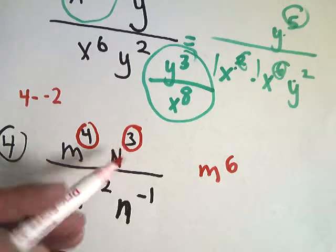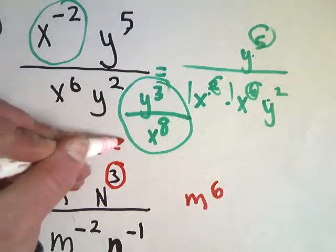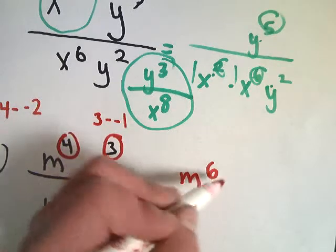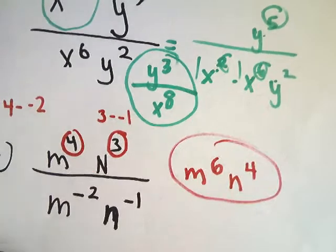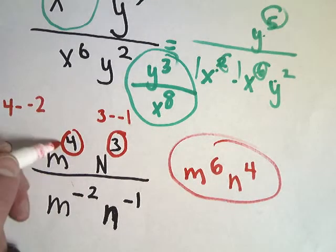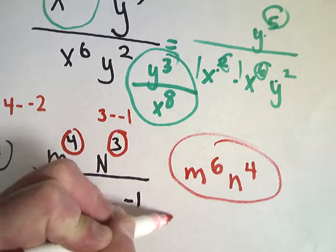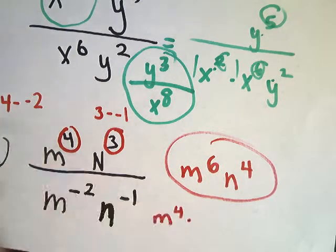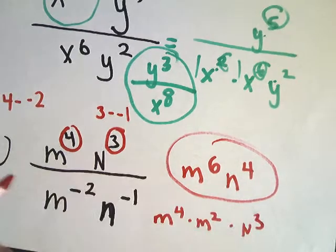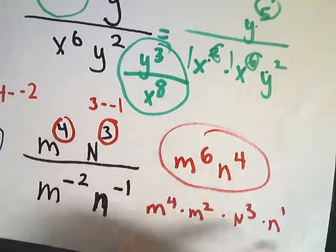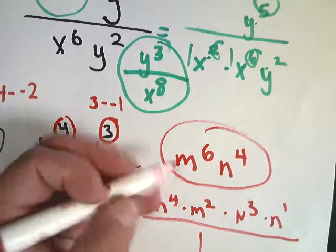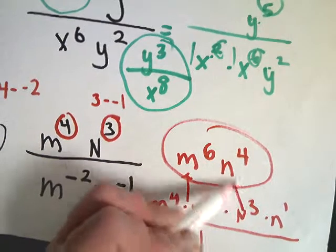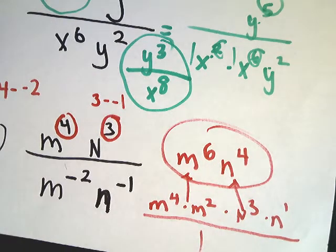So, you get m to the 6th power on the top. And, for the n's, you'll do 3 minus negative 1, which is the same as 3 plus 1, which means your final answer is n to the 4th power. So, that's one of the ways you could do that one. Or, if you'd rather go ahead and move this up to the top, your whole numerator at that point will become n to the 4th times n to the 2nd times n to the 3rd times n to the 1st. That'd all be over 1. You'd just put these two together by multiplying and adding, and you'd still get n to the 6th. And, then you'd do these together, and you'd get n to the 4th. So, either way that you want to do those is fine.